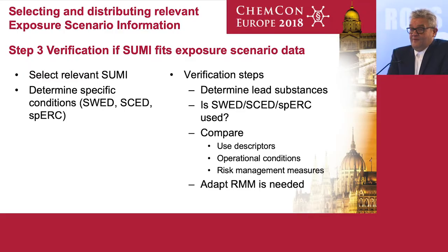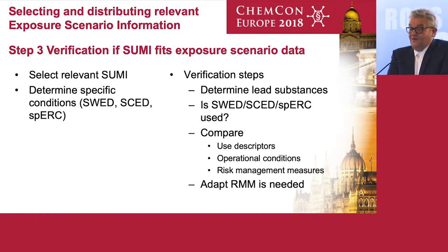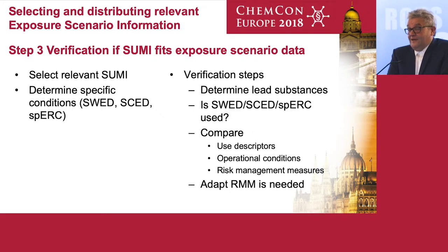The other way is the bottom-up approach. You have a SUMI which is relevant for the products you make and the sectors you are selling to. It has conditions and parameters. The only thing you then need to do is, for the lead substances you have defined, check whether those operational conditions and risk management measures are covered or not. If they are not covered, you may need to adapt a risk management measure and then clearly communicate it down your supply chain.